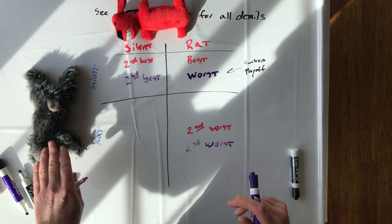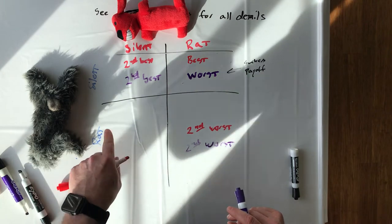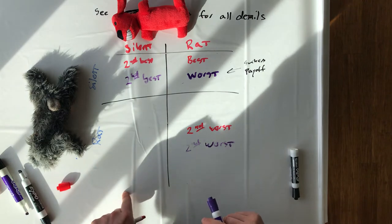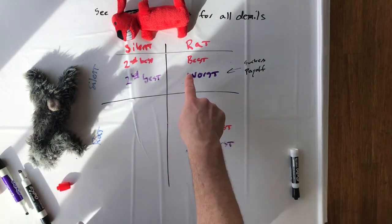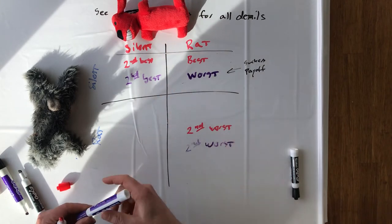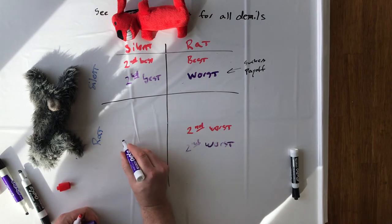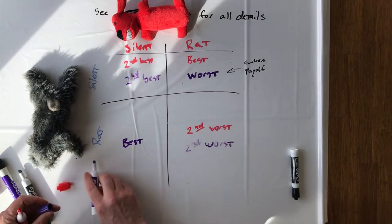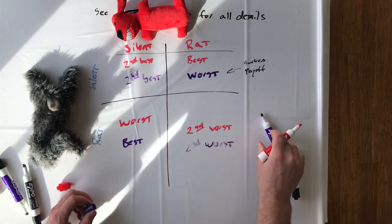In the case where Rabbit, being a rodent, rats out Red Dog, and Red Dog, being the loyal animal she is, keeps her mouth shut, well, then we have the reverse. We have the sucker's payoff for Red Dog, because now we have Rabbit's best and Red Dog's worst.